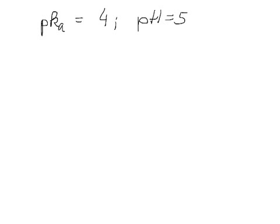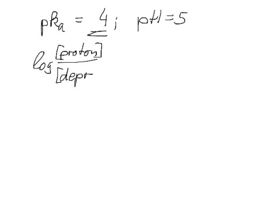And we set log protonated divided by the deprotonated concentration equals pKa minus pH. And let's see whether this sidechain is in the protonated or deprotonated form. All we need to do is put our numbers in.